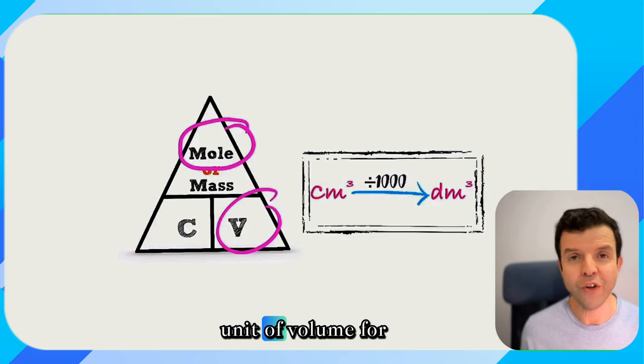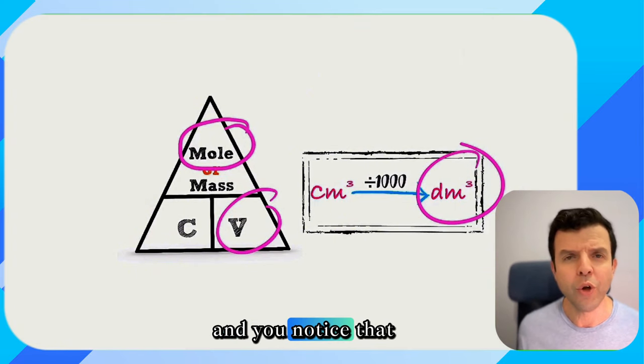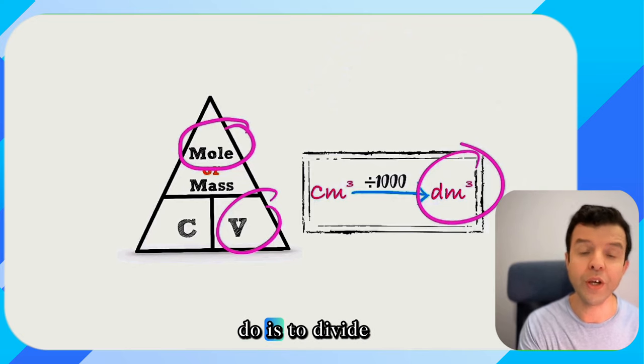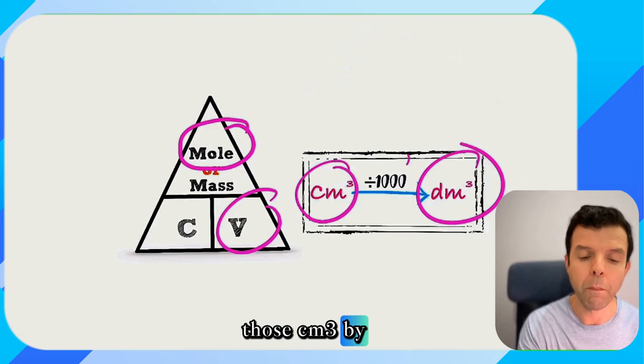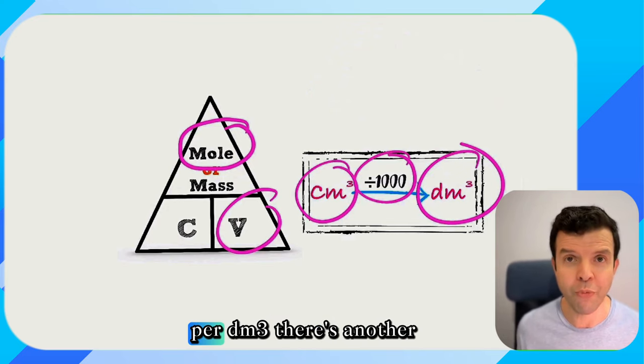Note that the official unit of volume for concentration has to be in dm³. And you'll notice that many exam questions they give you the volume in cm³. So all you have to do is to divide those cm³ by a thousand so you get the unit of concentration in moles per dm³.